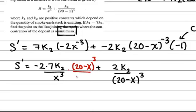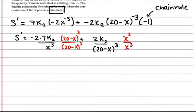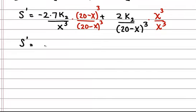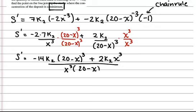And now I'm going to get myself a common denominator so that way I'm able to add my two fractions. So in the numerator, I have negative 14k sub 2 times 20 minus x quantity cubed plus 2k sub 2 times x cubed. And all of that stuff is over x cubed times 20 minus x quantity cubed.